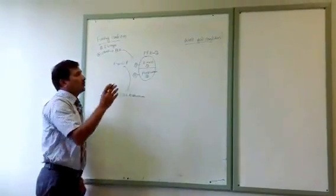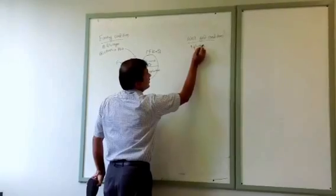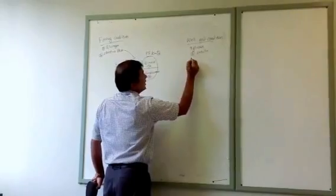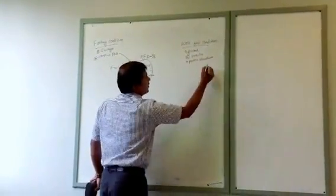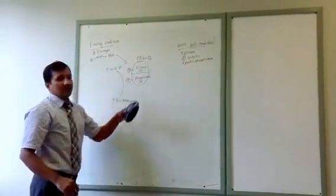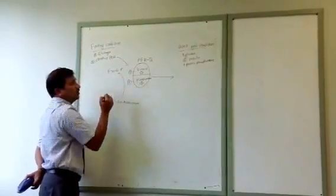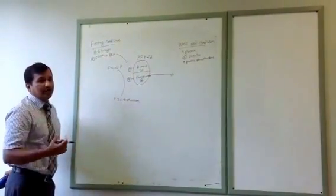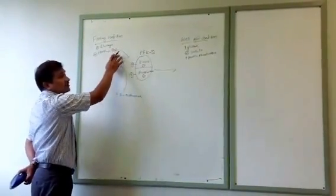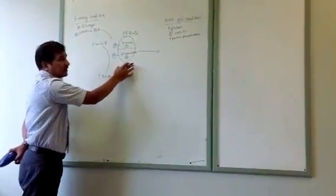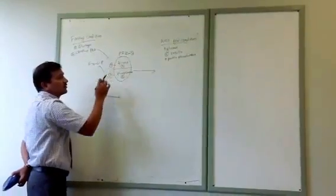Now in the well-fed condition, there is an increase in glucose which leads to increased insulin. Insulin activates protein phosphatase, which acts on PFK2 and removes the phosphates that were added by glucagon-driven protein kinase A during fasting. So when transitioning to the well-fed state, insulin-activated protein phosphatase removes the phosphates from both the kinase and phosphatase subunits of PFK2.